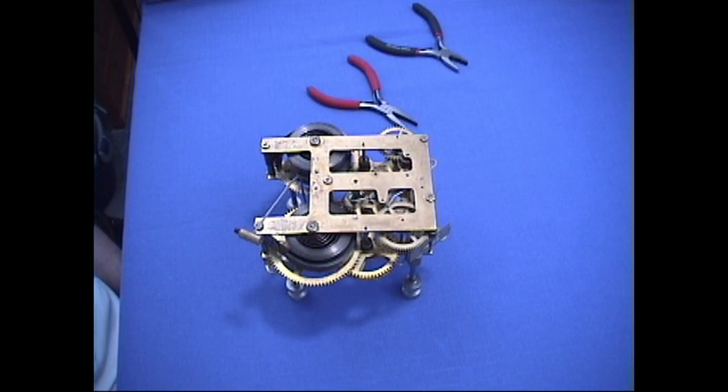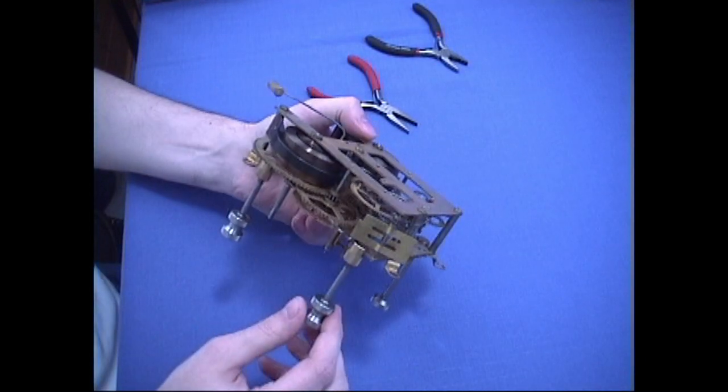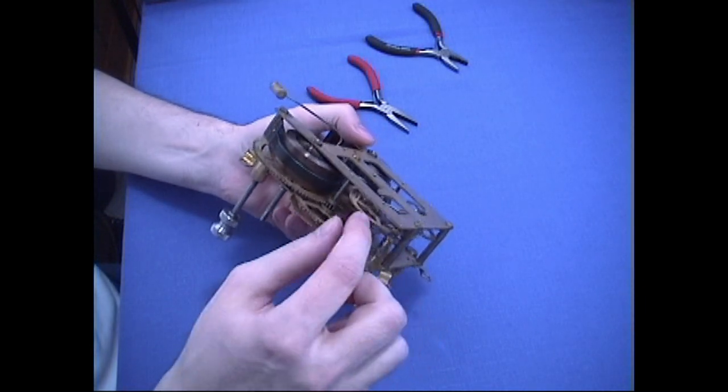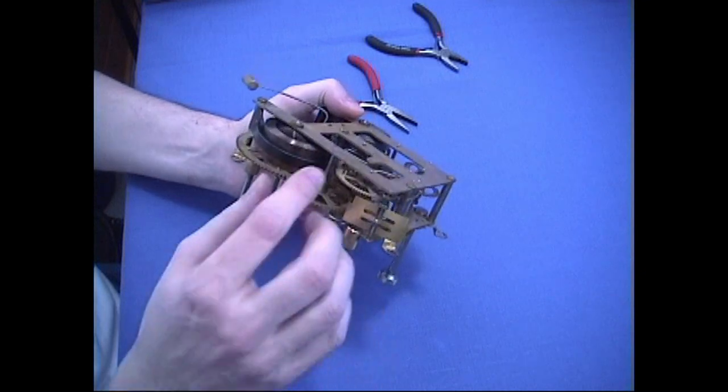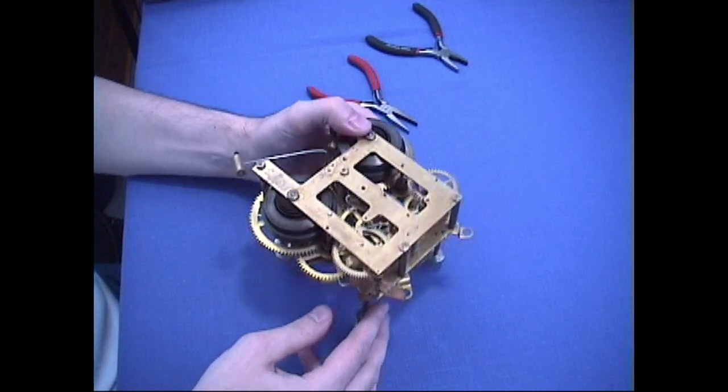In this section what we're going to talk about is what's called a plate spreader. The purpose of a plate spreader, as we did earlier in the video, where we needed to separate these plates here in order to turn our strike wheels in order to get them in the proper position for striking position, we did that primarily by hand.